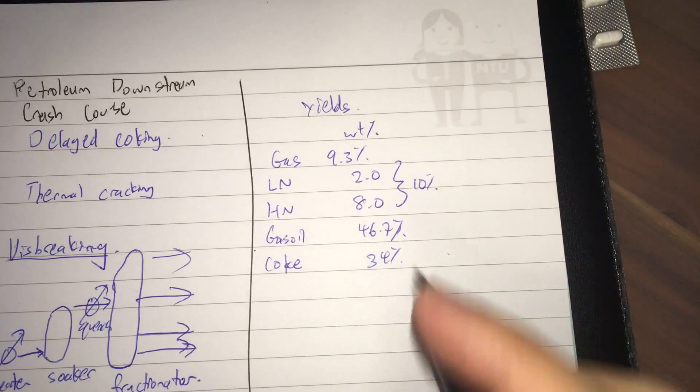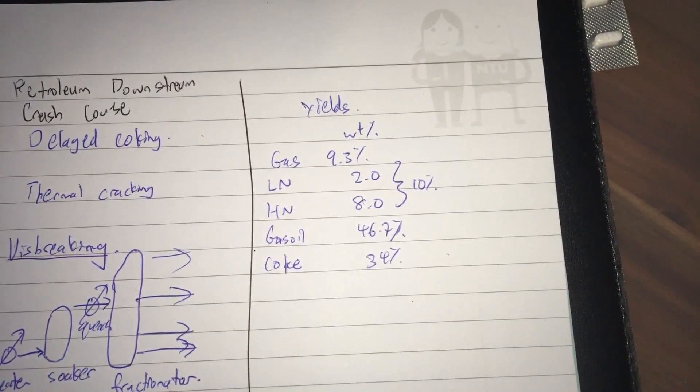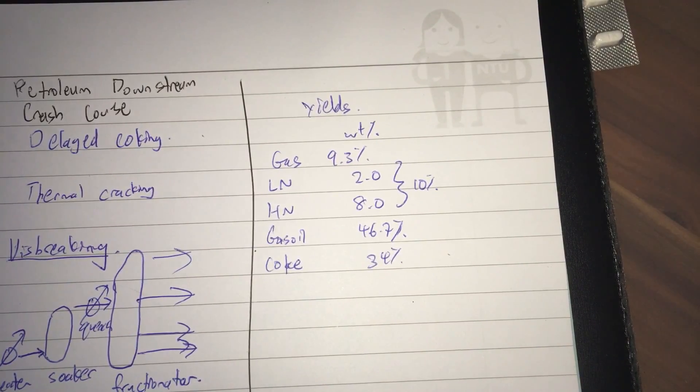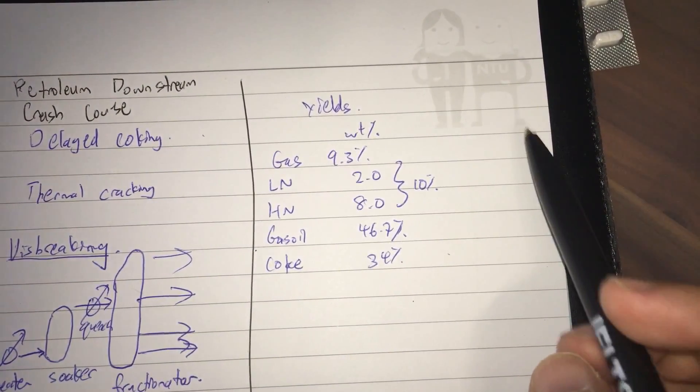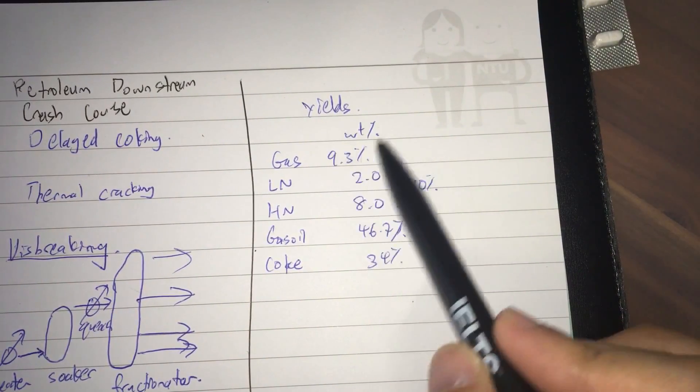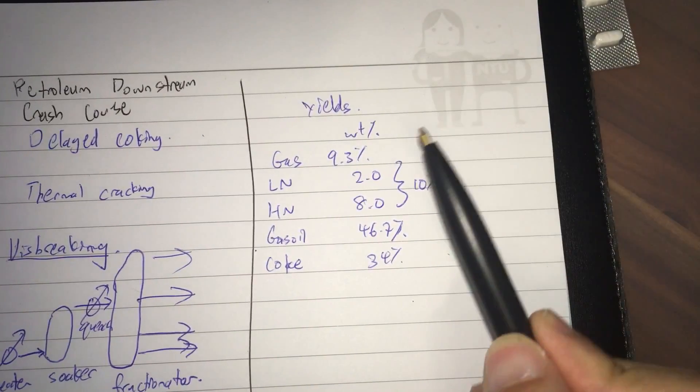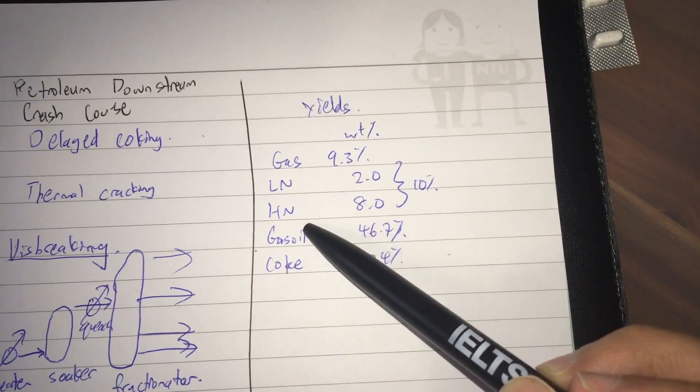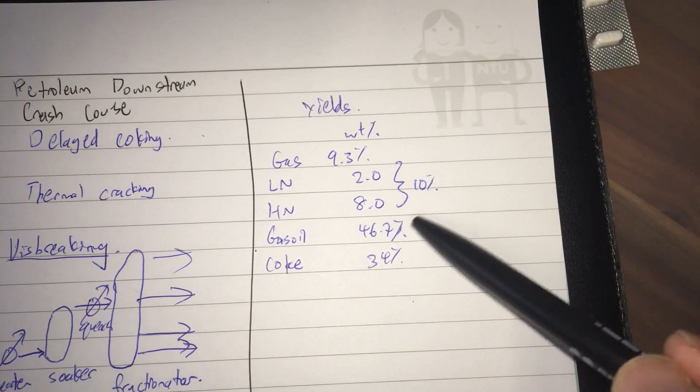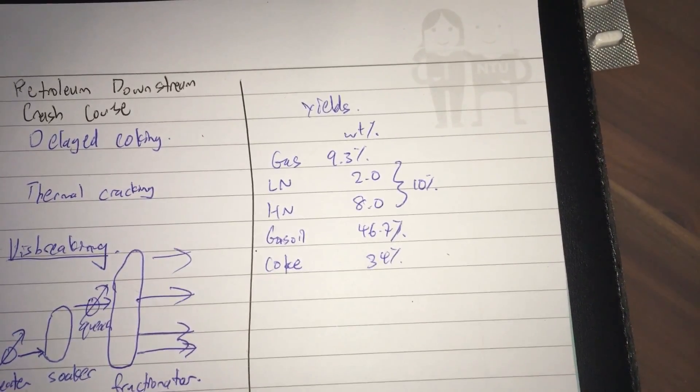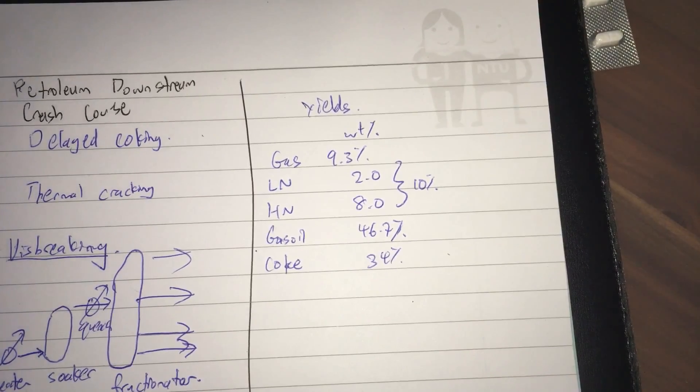Okay, so let's talk yields. According to some sources, some textbooks I read, in particular, Gary's Petroleum Refining and Economics, the typical yields for coking are as follows. For gases, you have about nine to ten percent. The naphtha fraction is about ten percent as well. This LN and HN is just light and heavy naphtha. And, of course, you see the gas oil. The gas oil has a very large cut here. It maximizes the gas oil production, similar to the TGU.